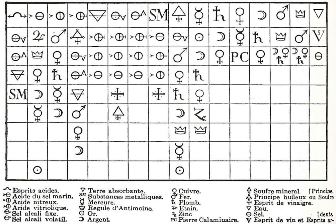In chemical physics and physical chemistry, chemical affinity is the electronic property by which dissimilar chemical species are capable of forming chemical compounds. Chemical affinity can also refer to the tendency of an atom or compound to combine by chemical reaction with atoms or compounds of unlike composition.